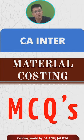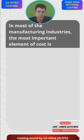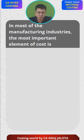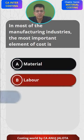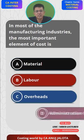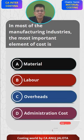So let's do it. In most of the manufacturing companies, the most important element of cost is: A) Material, B) Labor, C) Overheads, or D) Administration cost. Think of the correct answer. Actually, this chapter is material costing, so the answer is very obvious.